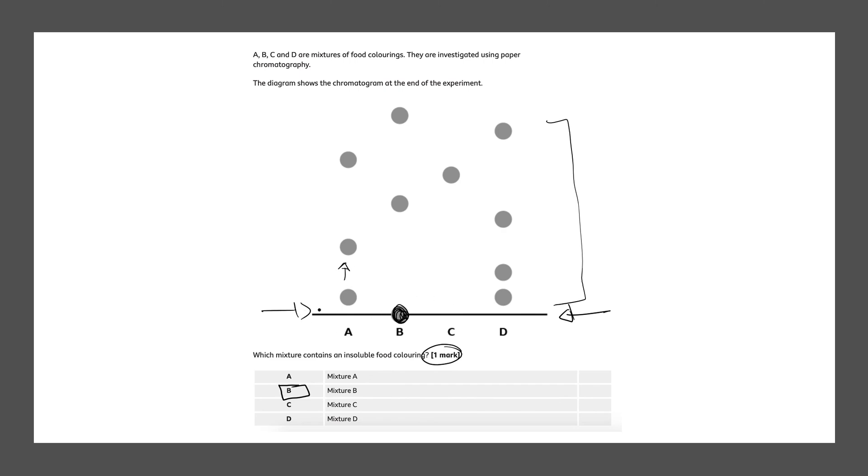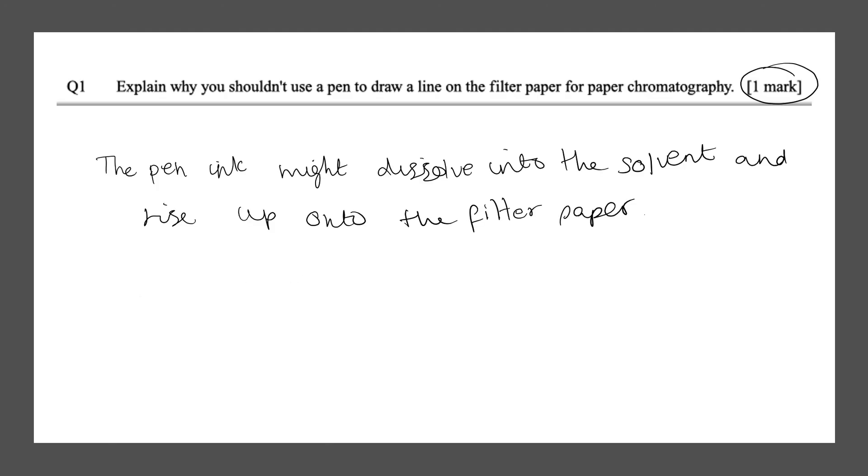This means if this line was drawn with pen, then some random dyes will interfere in the experiment and it won't be a fair test. So it's important that you draw this line with pencil.